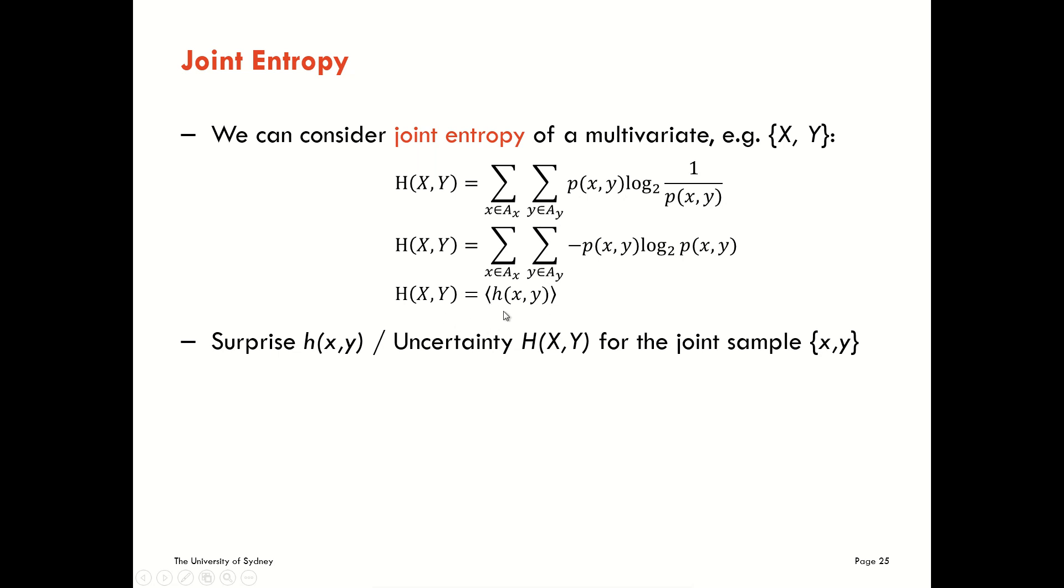Of course our joint entropy is equal to the expectation value of the Shannon information content of x and y held jointly. And our interpretation is a straightforward extension. The surprise of a symbol x and y or the uncertainty for variable big X and big Y is simply that of the joint sample x and y taken together.